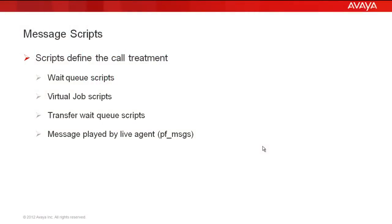When a call is made from a job, the treatment of the call depends on the telephony script assigned to the job. The typical categories of these scripts are wait queue scripts, virtual job scripts, transfer wait queue scripts, or scripts that give the agent the capability to play a message to the customer online. We will see how to create a script and how to assign it to a job.